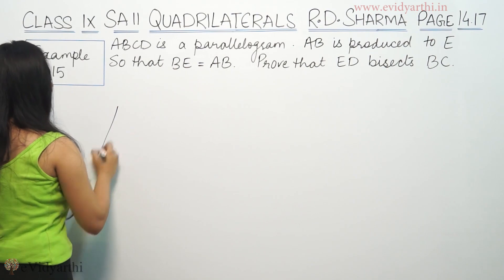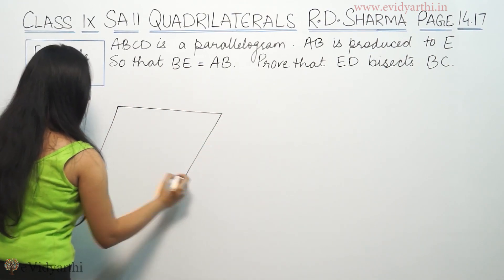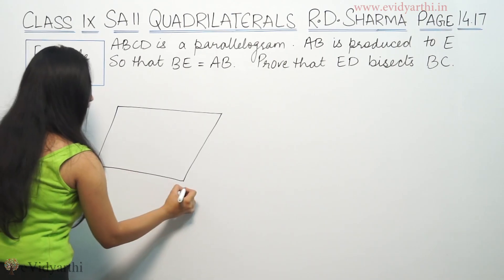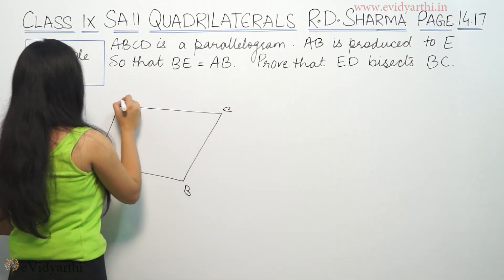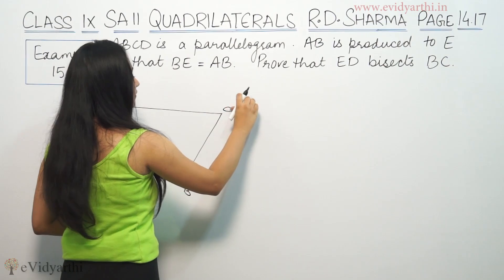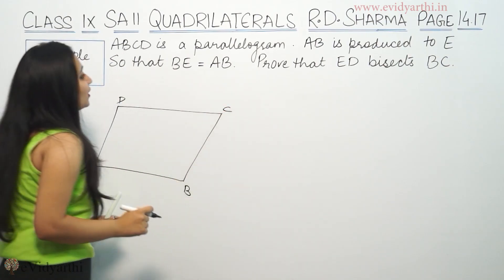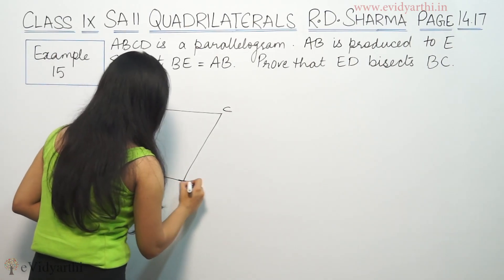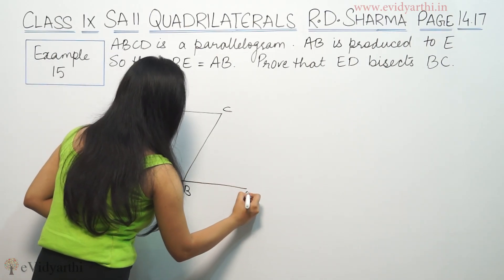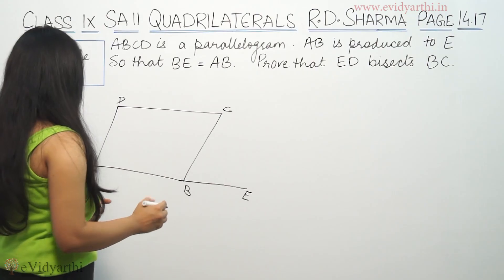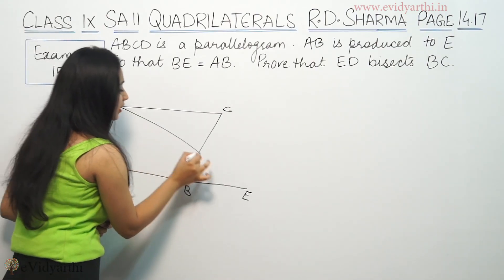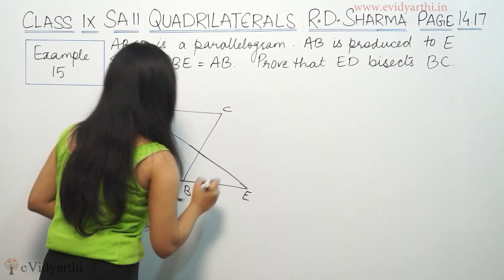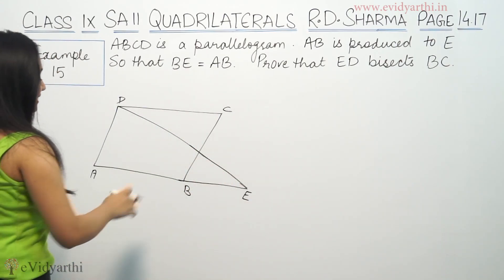So ABCD is a parallelogram. This is ABCD — this is a parallelogram. So AB is produced to E; this AB we have produced. ED means we will join this. ED bisects BC.